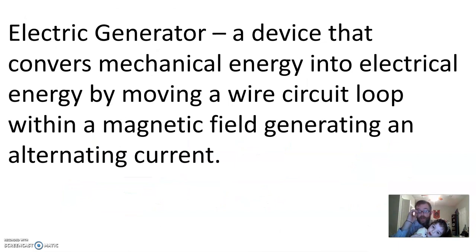So, let's talk about the three types of devices you need to be familiar with. An electric generator is a device that converts mechanical energy into electrical energy. Again, we're taking motion and generating electricity. So, a generator generates electricity from motion. It happens by moving a wire circuit loop within a magnetic field.